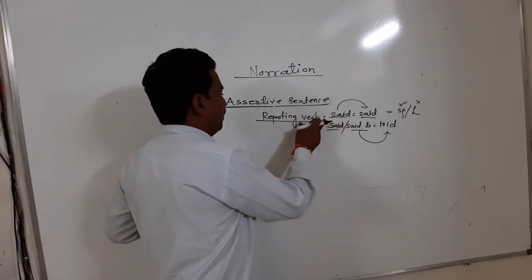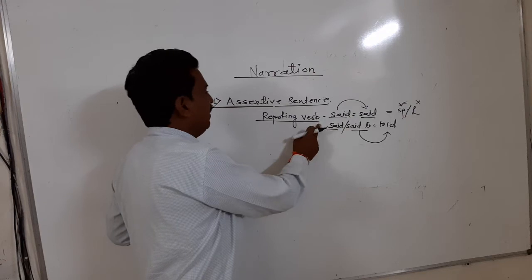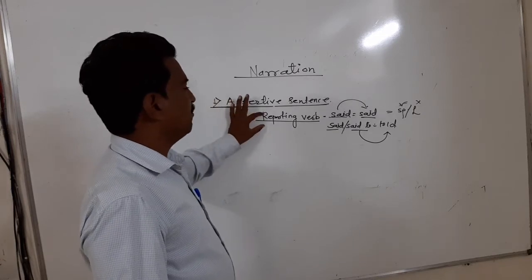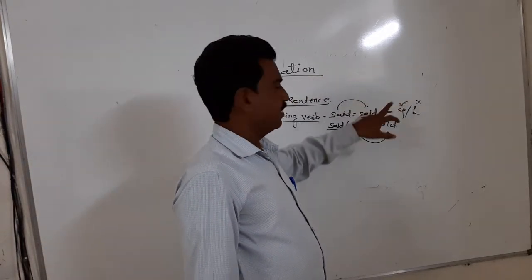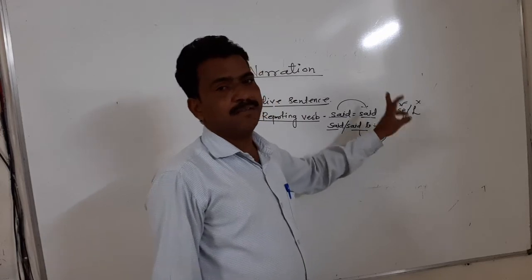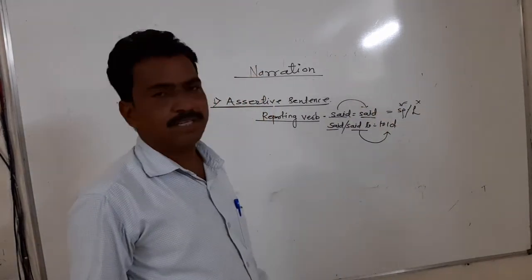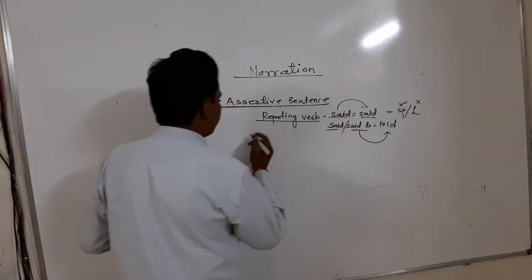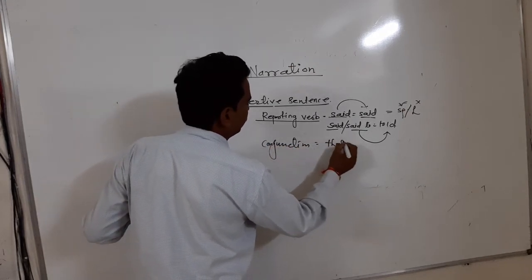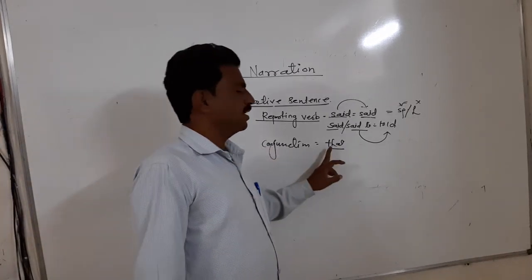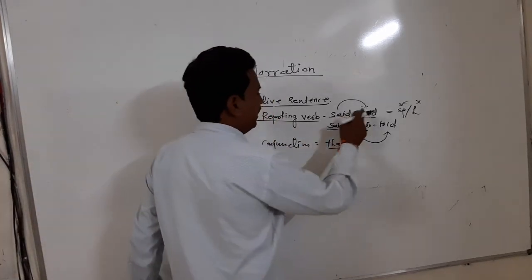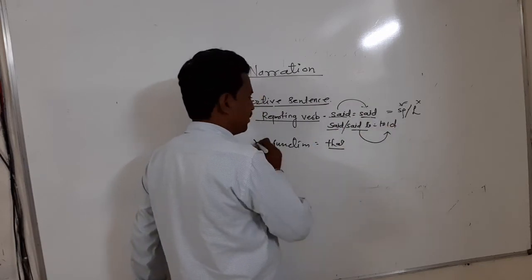When we use the reporting word for an assertive sentence: 'said' is used when only the speaker is given, and 'told' is used when both the speaker and listener are given, in place of 'said' or 'said to.' And the conjunction used is 'that.' So for an assertive sentence: reporting verb — 'said' or 'told'; conjunction — 'that.' One kind of sentence is completed here.